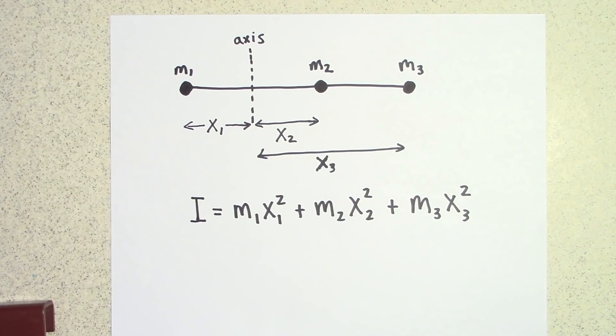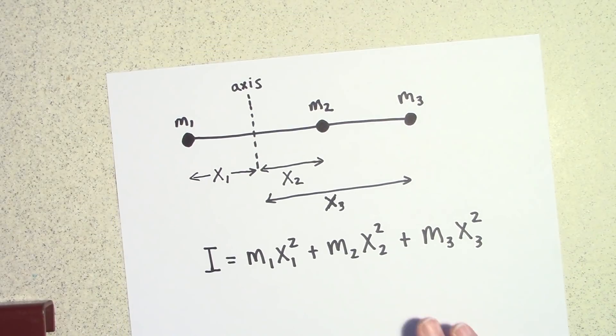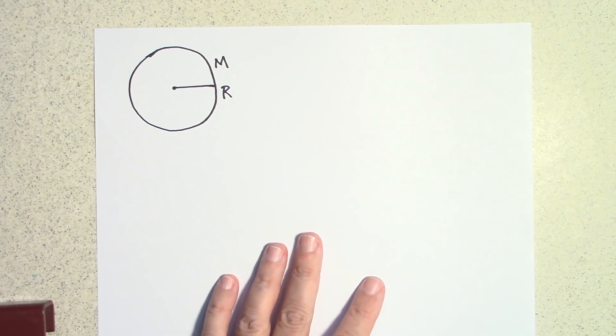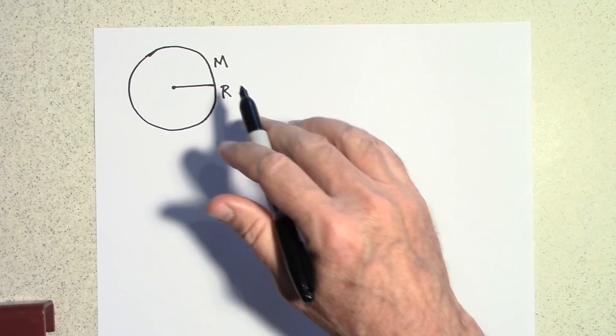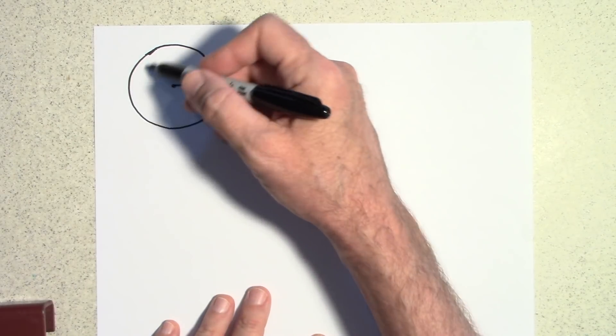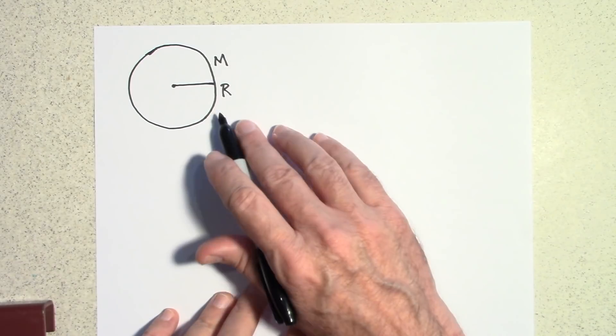All right, so let's get started with this. So here is my disk of mass m, uniform mass distribution. It's distributed throughout the entire thing and it's a radius r.